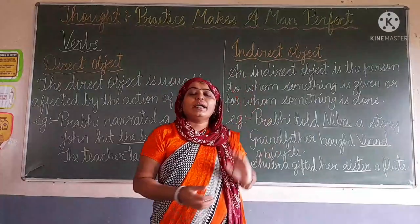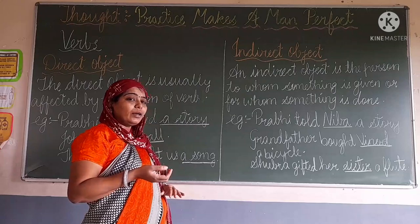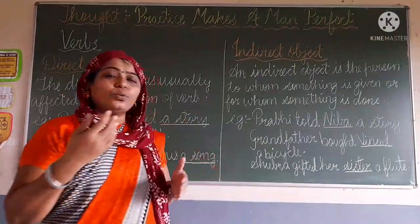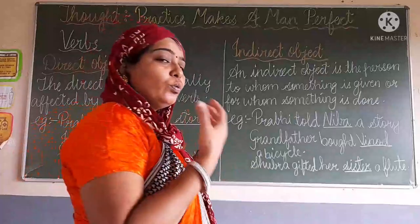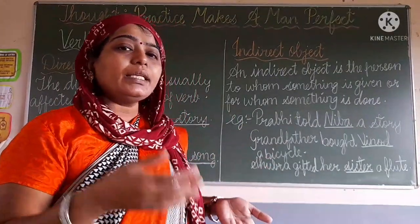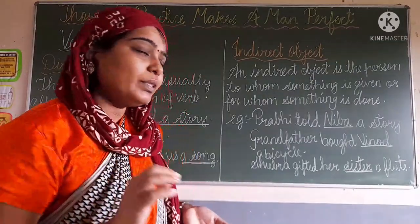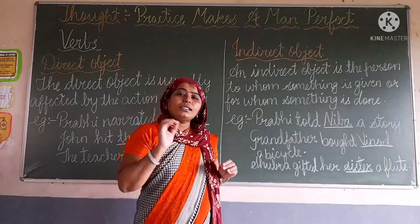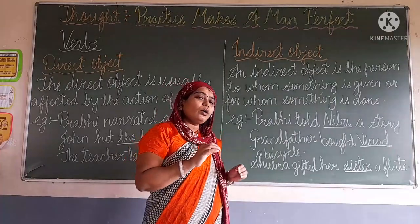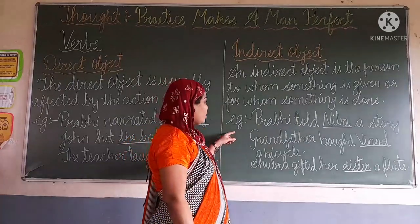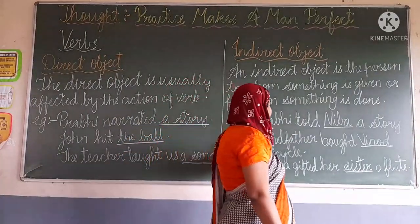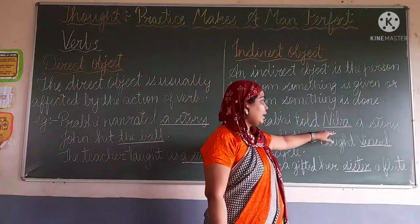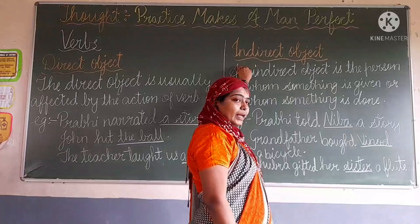Now we are going to learn about indirect object. What is the meaning of the indirect object? Indirect object is a person — it is the person to whom something is given or for whom something is done. Here I have given some examples. See, Praveen told Nipha a story. Who is the person here? Nipha is the name of a person, so Nipha is the indirect object.